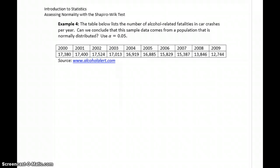In example four, our last example, we have a table that lists the number of alcohol-related fatalities in car crashes per year. Can we conclude that this sample data comes from a population that is normally distributed?